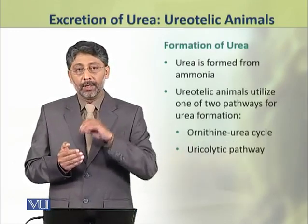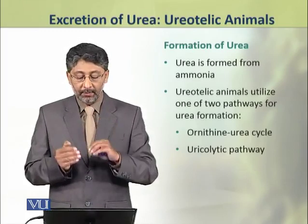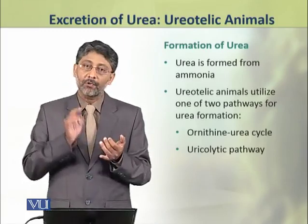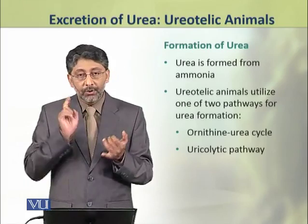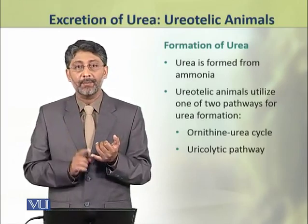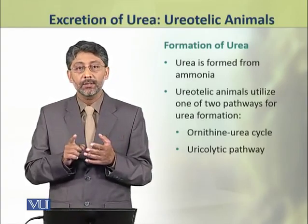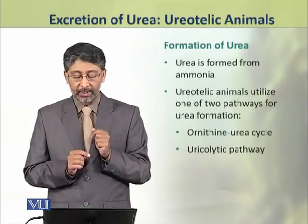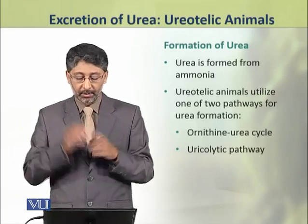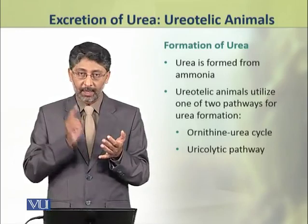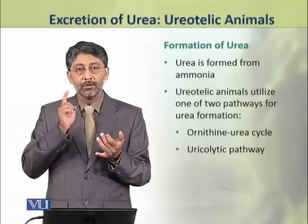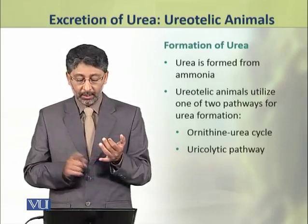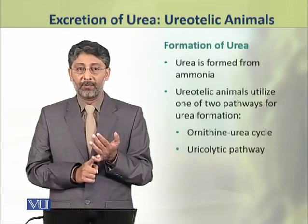Dear students, now we shall discuss the formation of urea. Urea is formed from ammonia. Ureotelic animals utilize one of two available pathways for urea formation: one pathway is called the ornithine urea cycle and the other pathway is called the ureolytic pathway.